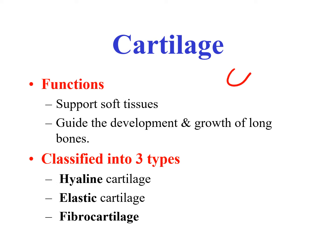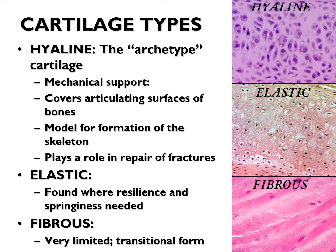The second function of cartilage is to guide the development and growth of long bones. In endochondral ossification, cartilage develops first and is then replaced by bone. We have three types of cartilage: hyaline cartilage, elastic cartilage, and fibrocartilage. Hyaline cartilage is the archetype cartilage — it provides mechanical support, covers articular surfaces of bone, serves as a model for skeleton formation, and plays a role in repair of fractures.